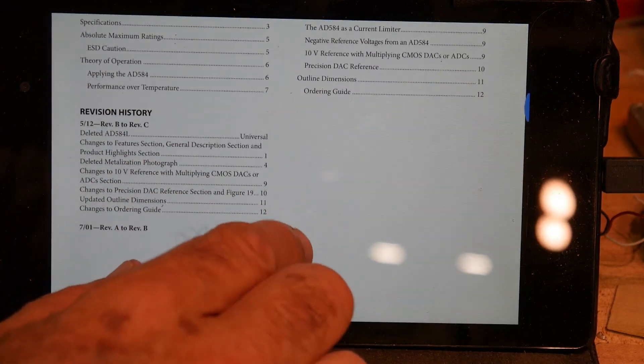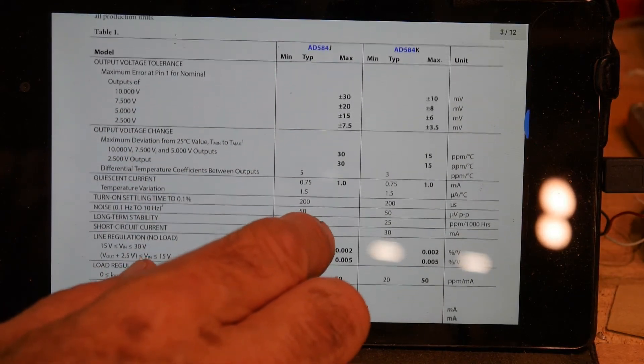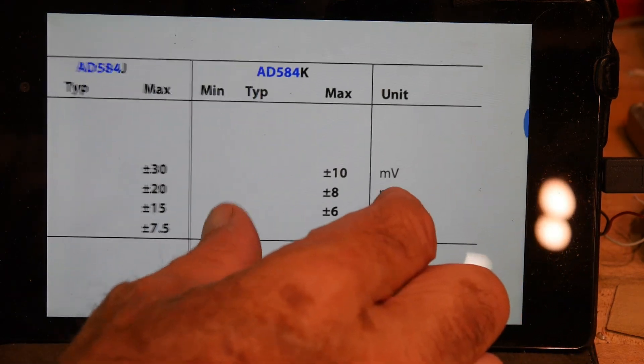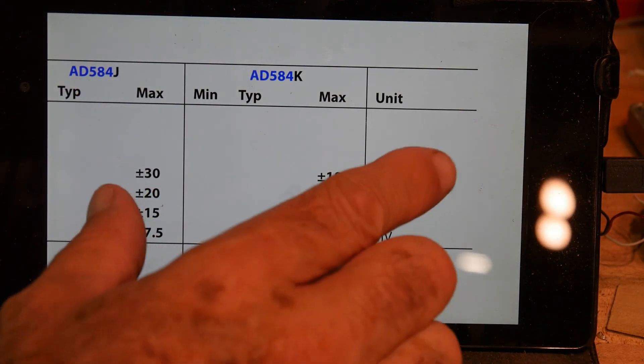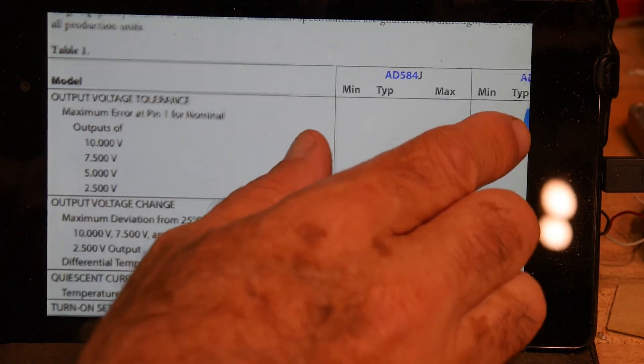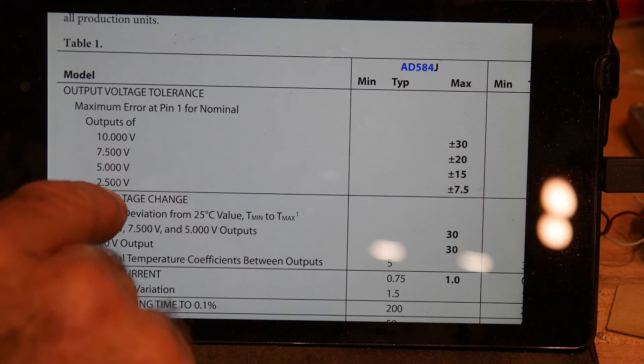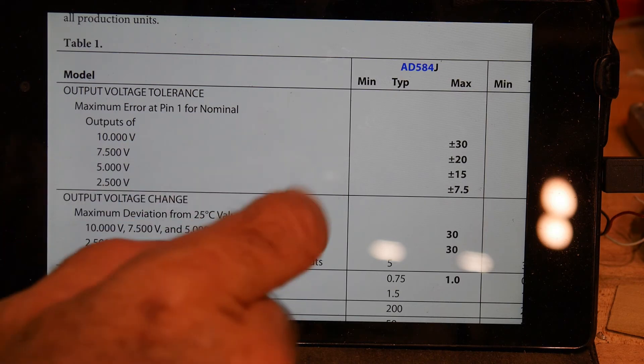And what we're really interested in is how accurate is it. Like I said, it's very stable. These are the K versions. So it basically can output 10 volts, 7.5, 5, and 2.5. That's what we saw on the little box.